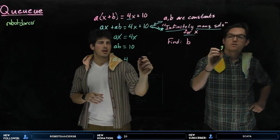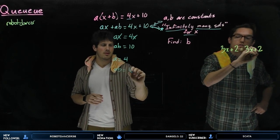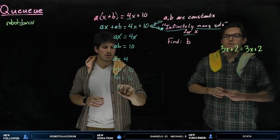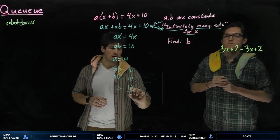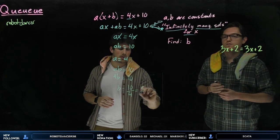And from there, I can say that ab equals 10, 4b equals 10, b equals 10 over 4, or 5 halves.